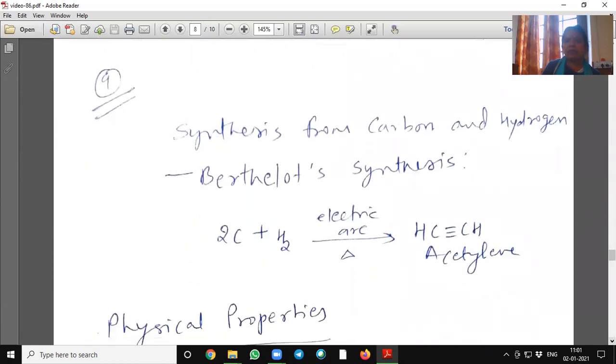Synthesis from carbon and hydrogen. It is called Berthelot synthesis. It is elemental synthesis, two moles of carbon and hydrogen. When reacted at 1200 degree centigrade temperature or electric arc, it will form acetylene gas.